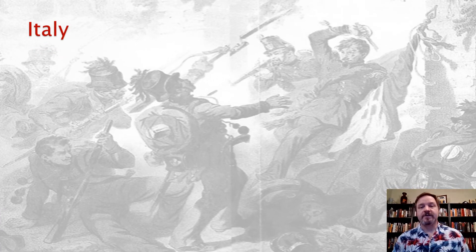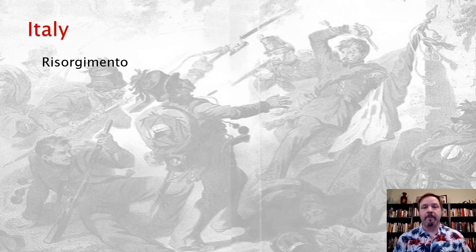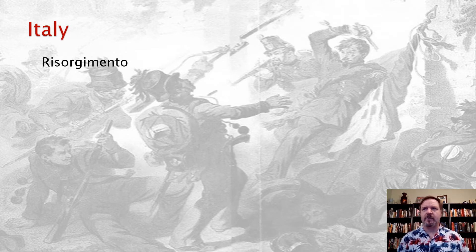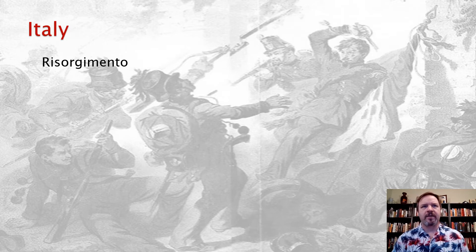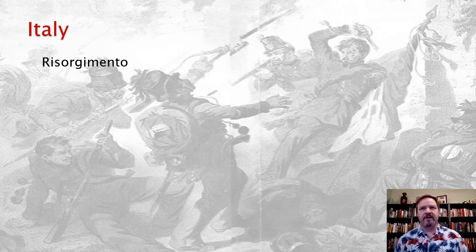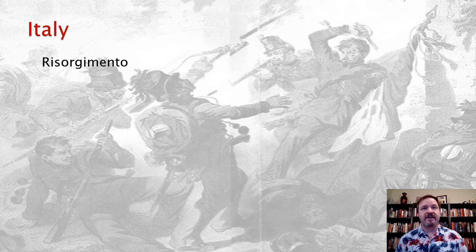1848 also saw a unification movement in Italy called the Risorgimento. The Risorgimento was kind of a half-unification movement and also a movement to drive the Austrians out of Venetia — a two-pronged effort. The revolts began actually back in January in Sicily, where nationalists and liberals wanted the Bourbon monarchies to push for national unification and a liberal constitutional system.